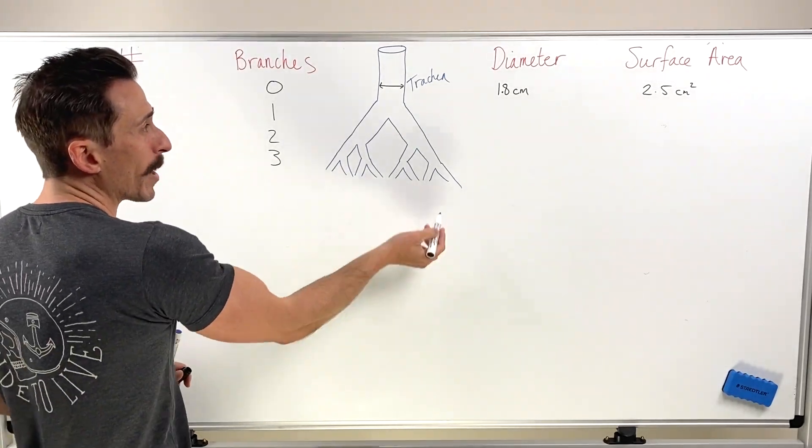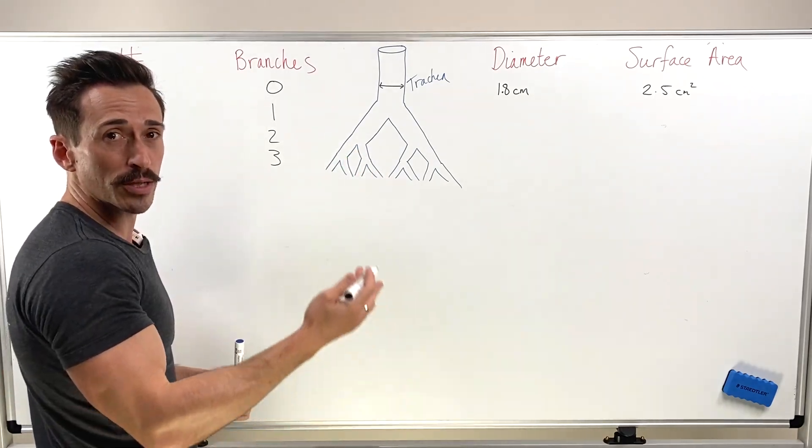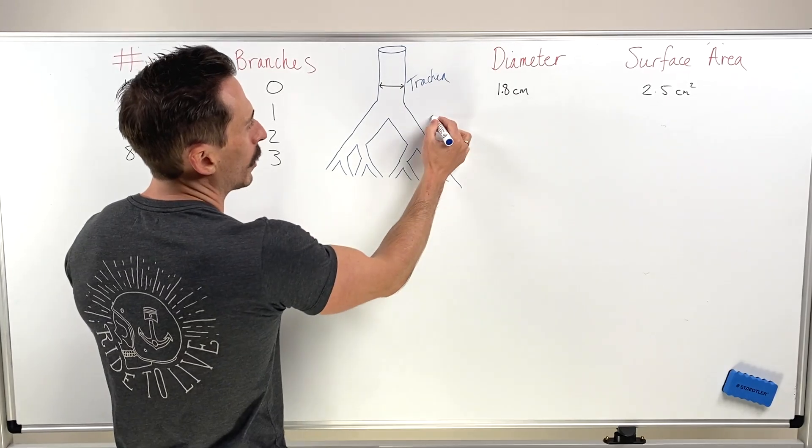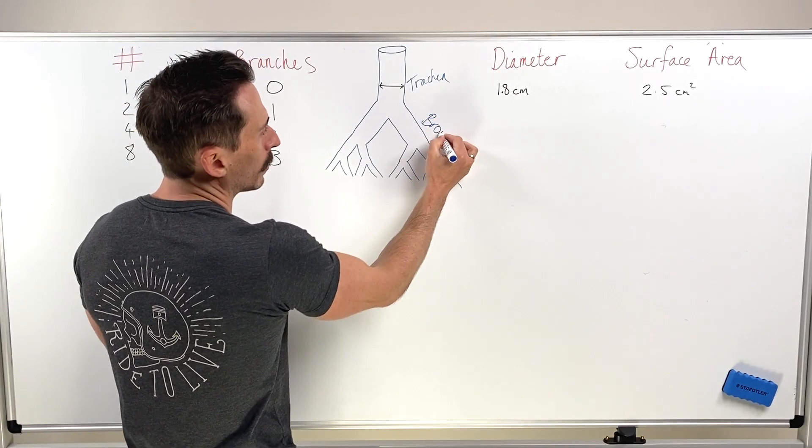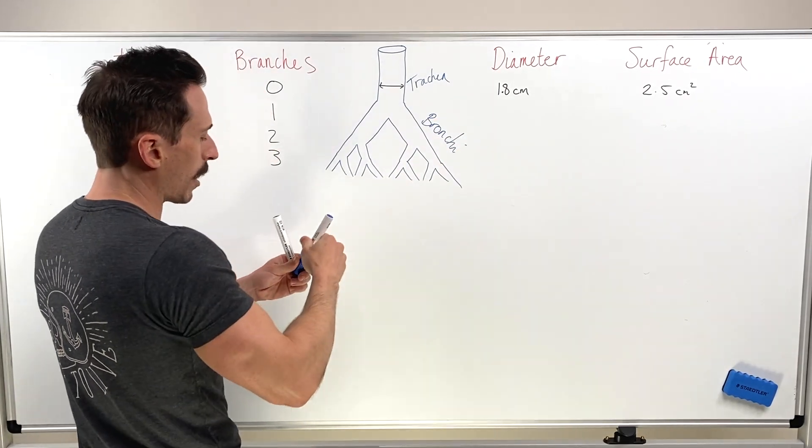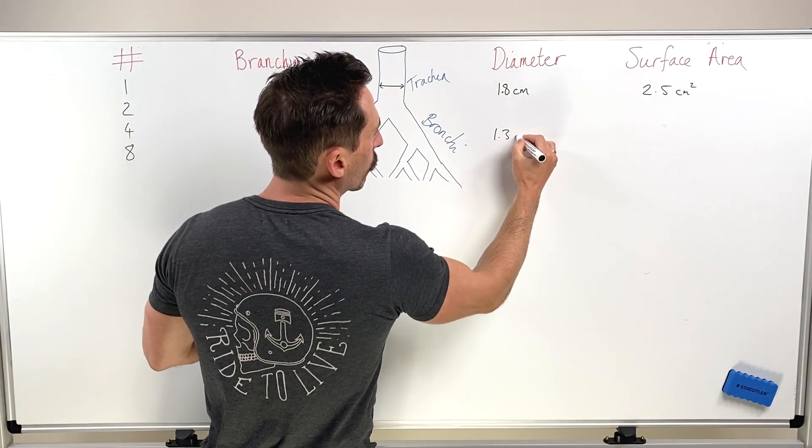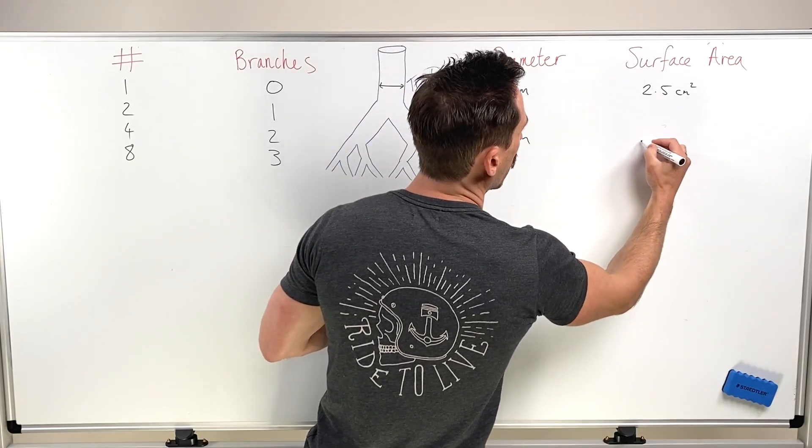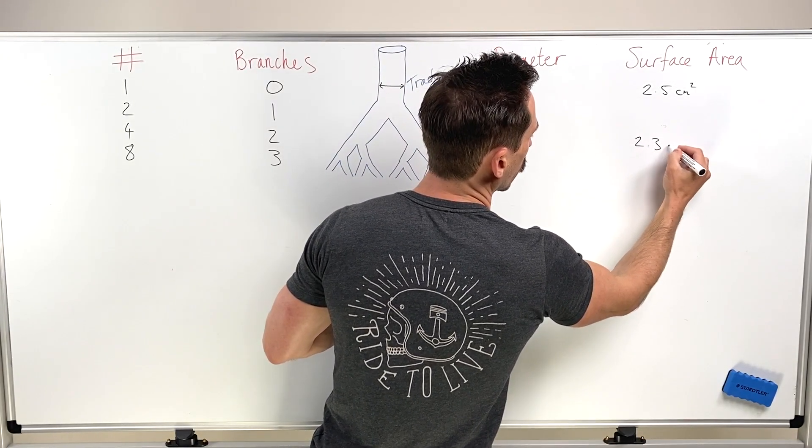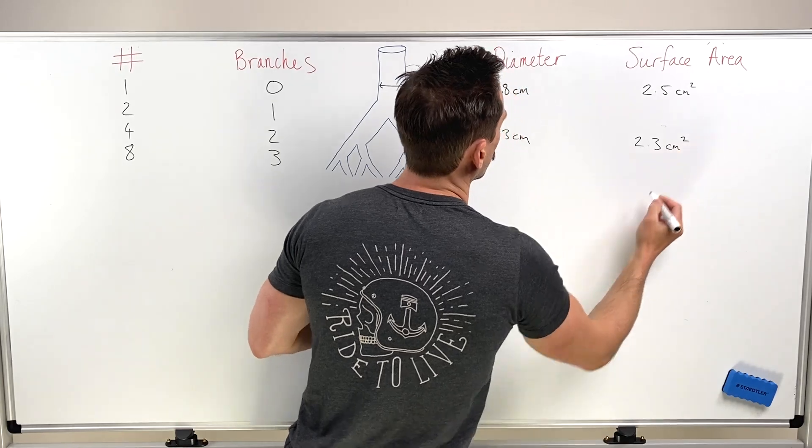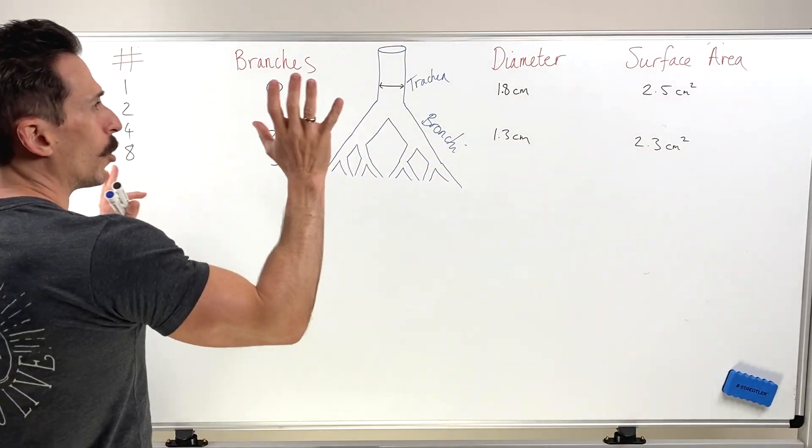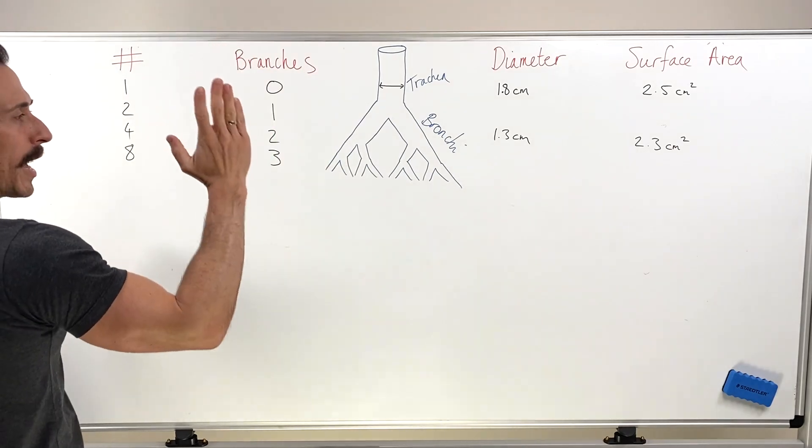Now as you can see, every time it branches, the diameter reduces. So the average diameter is around about 1.3 centimeters, with a surface area of around about 2.3 centimeters squared. So we've got our trachea and our bronchi.